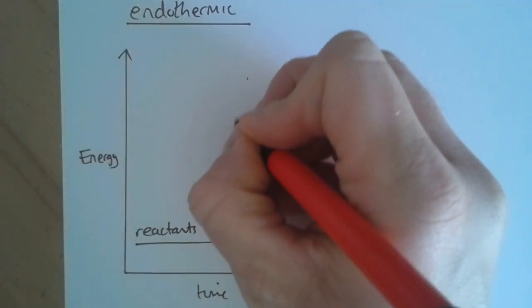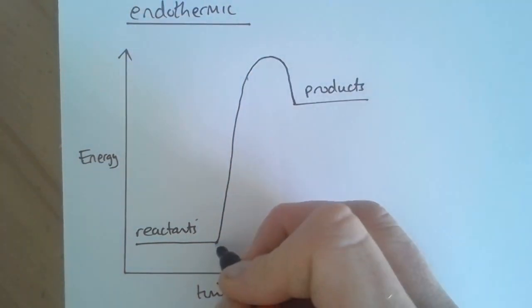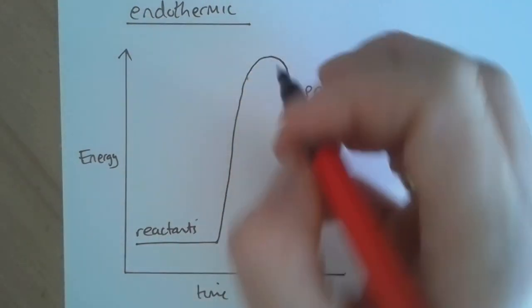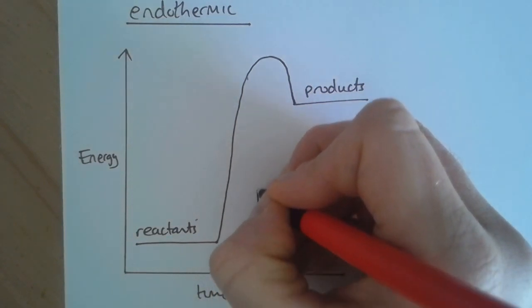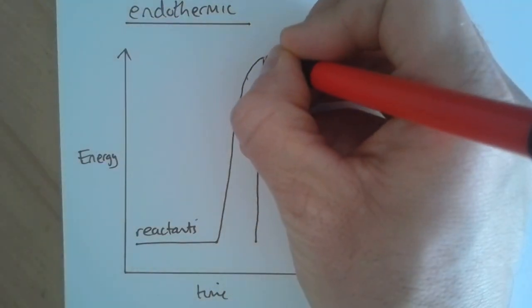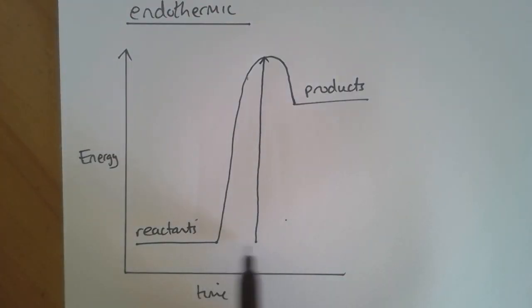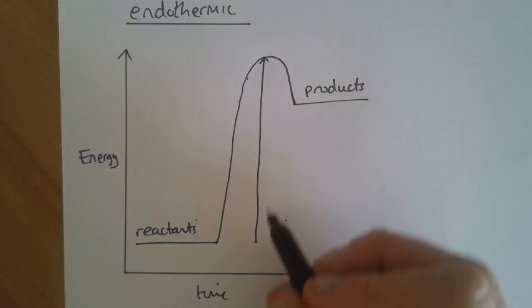The reaction graph still looks the same. So there's a line here all the way up to the top. Again, we call this the activation energy. So that arrow needs to go from being in line with the reactant line all the way to the top of the peak.